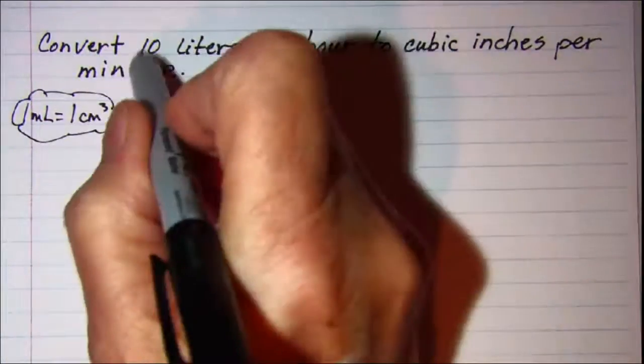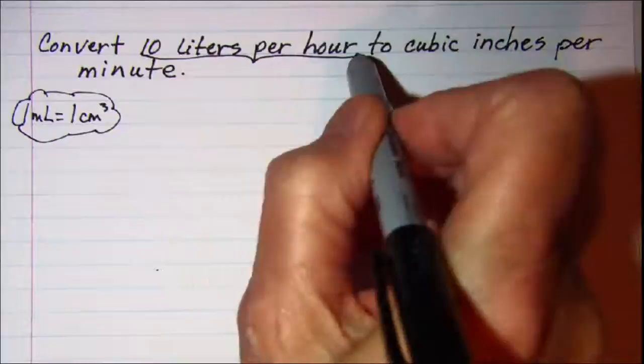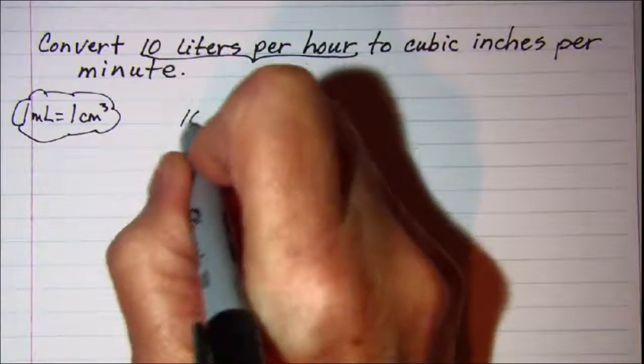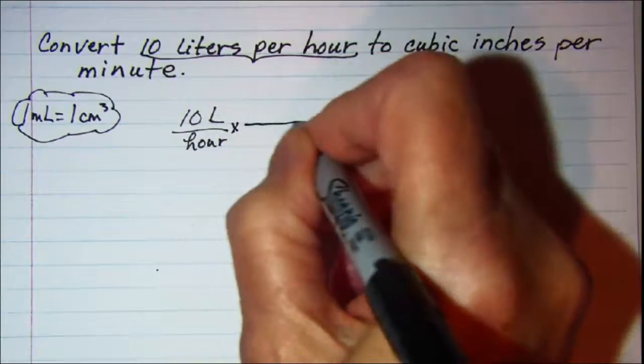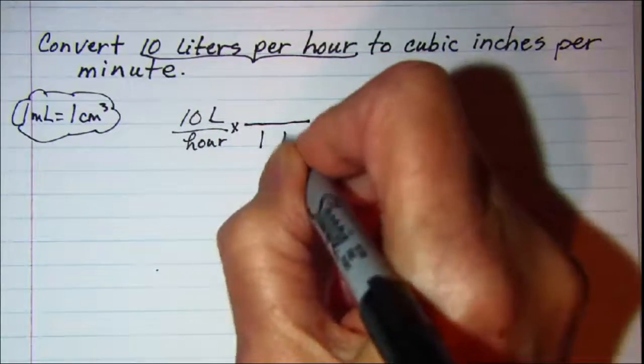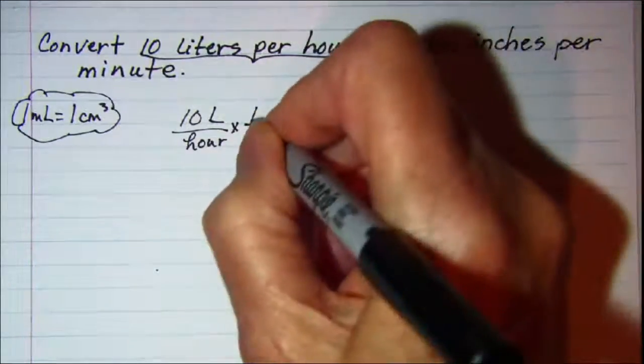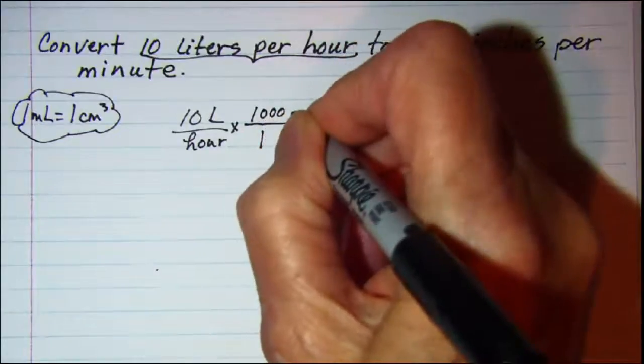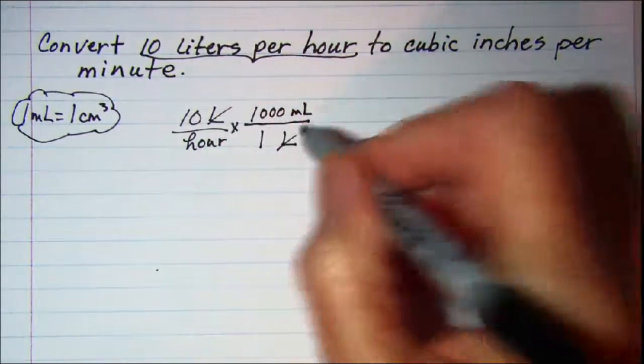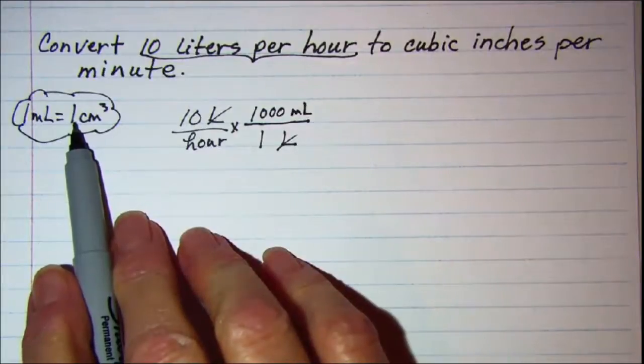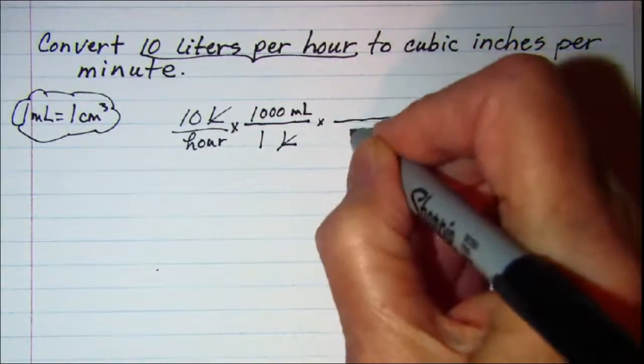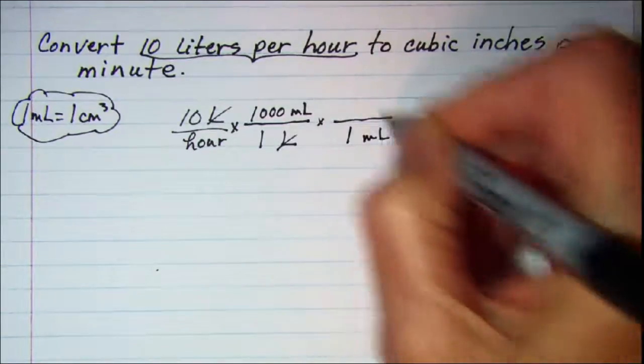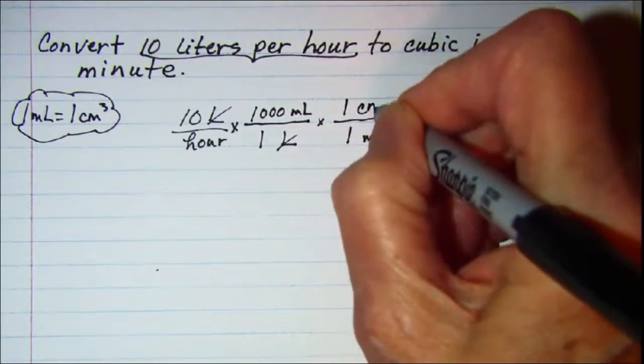We'll begin with this ratio: 10 liters per hour. Convert from liters, so 1 liter is the same as 1,000 milliliters. These units are gone. Now I can use this equivalence to go over to English: 1 milliliter equals 1 cubic centimeter.